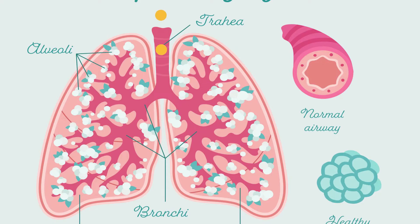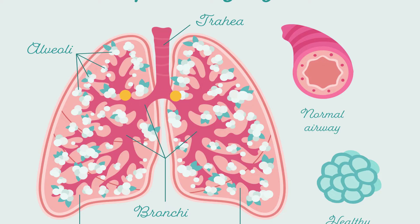The trachea branches into a left and right bronchus, and then further branches into bronchioles, and finally the oxygen travels to the alveoli.